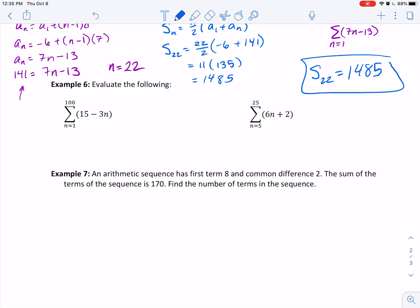Next, evaluate the following. They've given it to us in sigma notation. With this one, we know we can find our first term. When I plug in 1, I get 12. You can find your common difference is -3. And you can also find your 100th term. A_100, if I plug in 100, I have 15 minus 300 equals -285. With this one, you can decide which formula you want to use. It really doesn't matter.